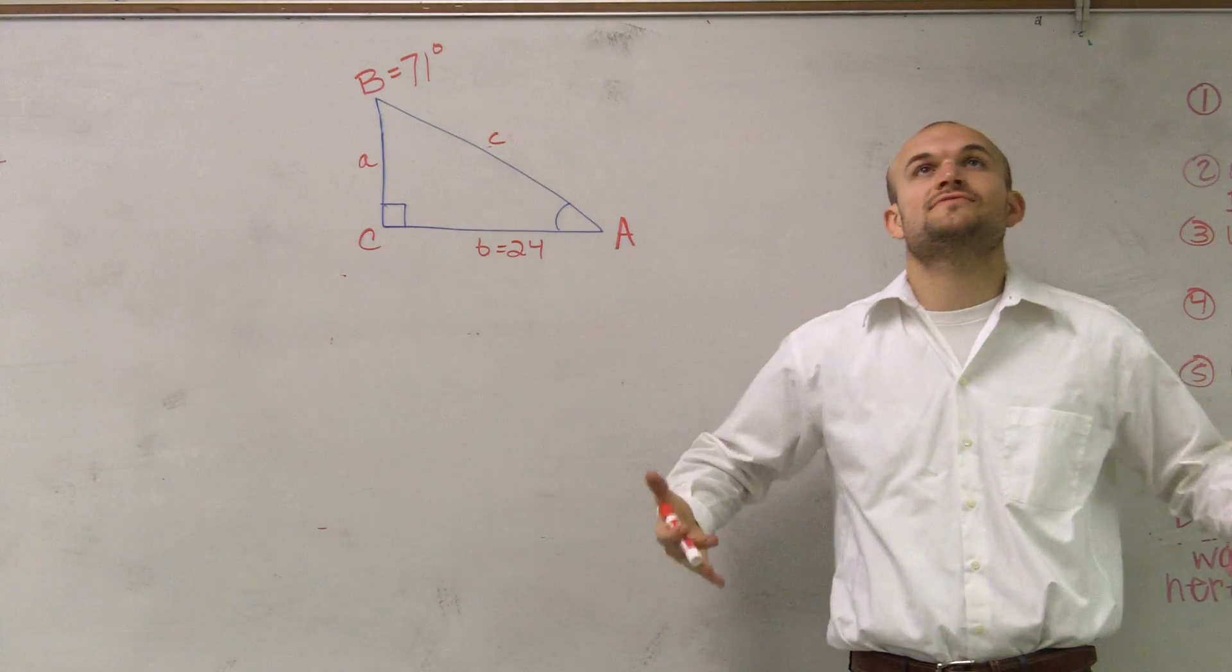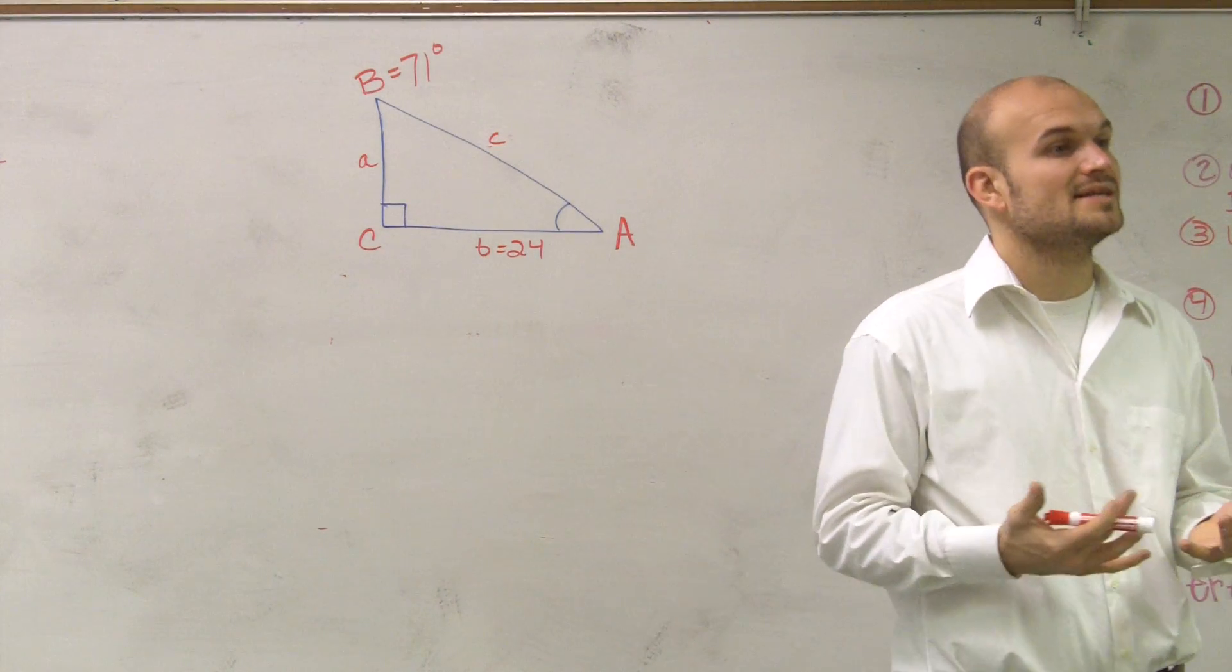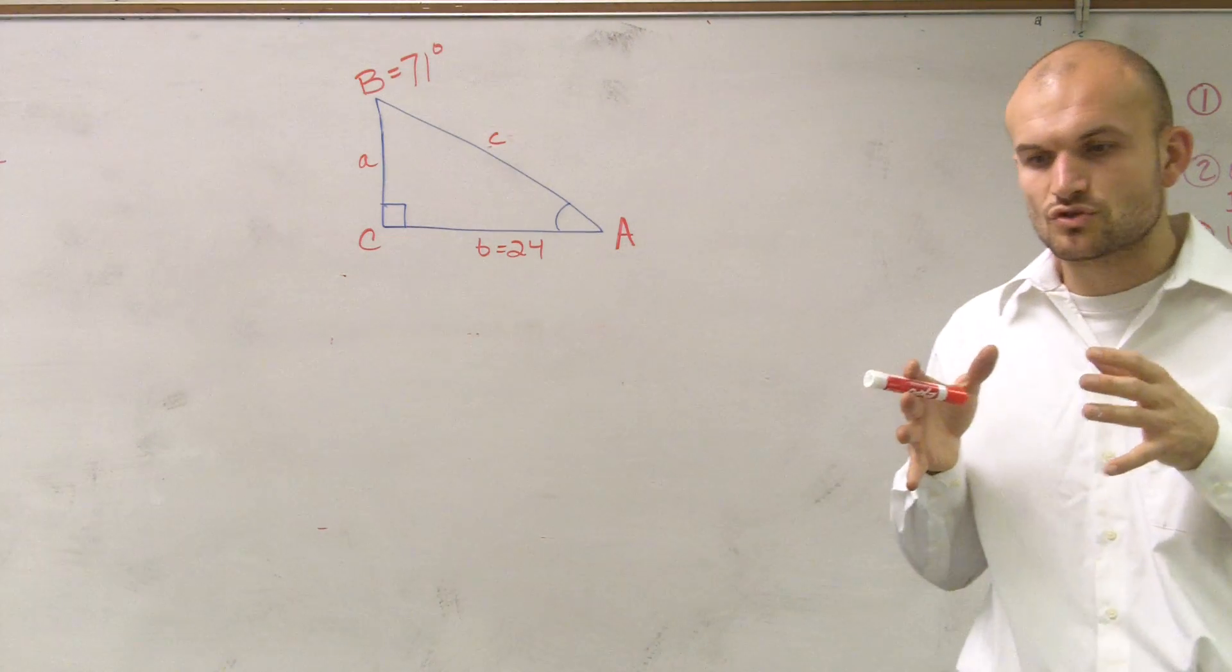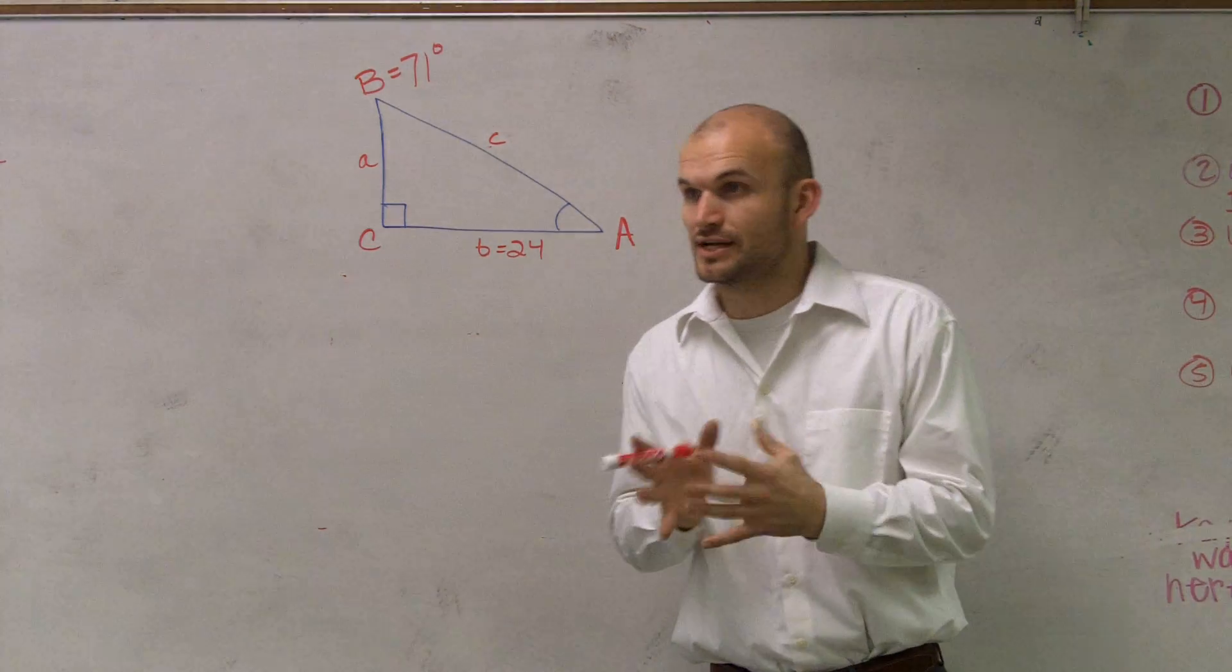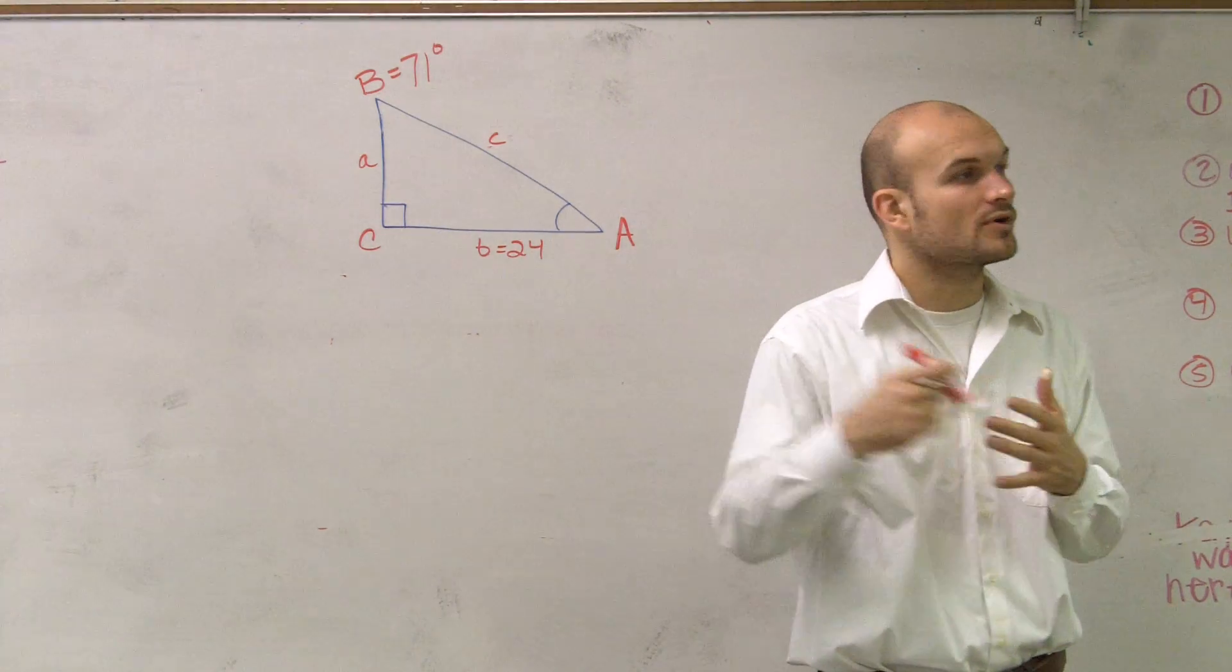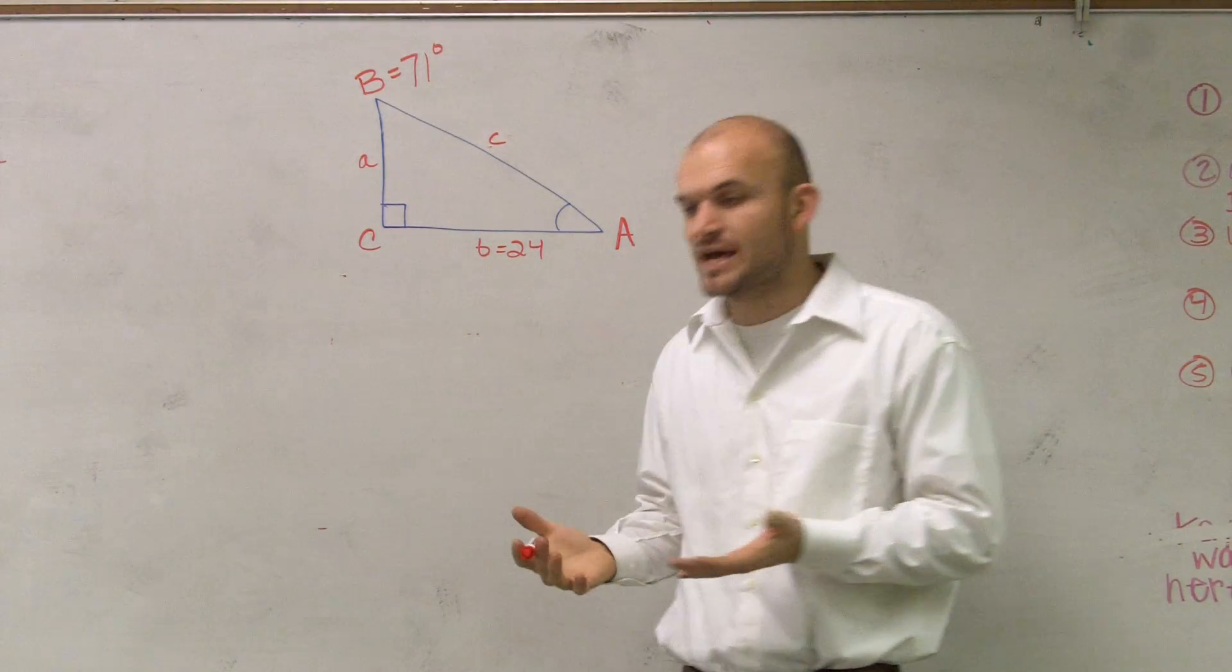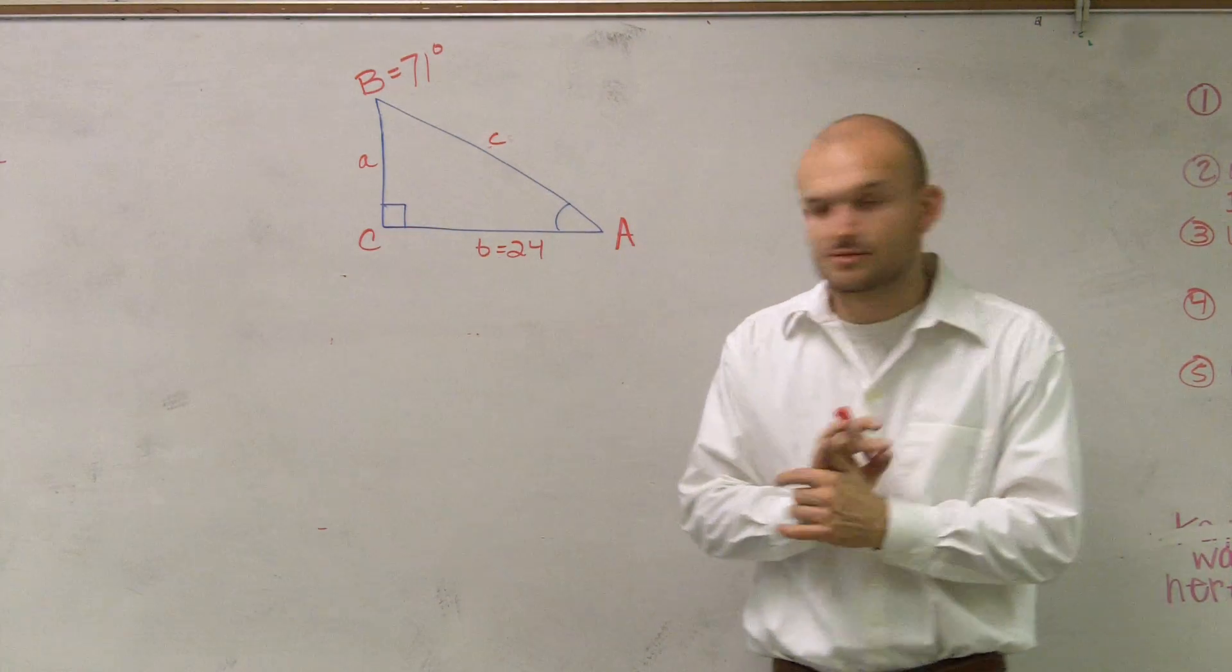So guys, we need to kind of transform ourselves back into geometry class and think of one of the most crucial things that you need to remember in geometry was that all the angles in a triangle added up to 180, right? So we're going to use that to help us solve this problem. We could also use that for trig identities. But to show you this problem, I'm going to get through this really as quickly as possible.